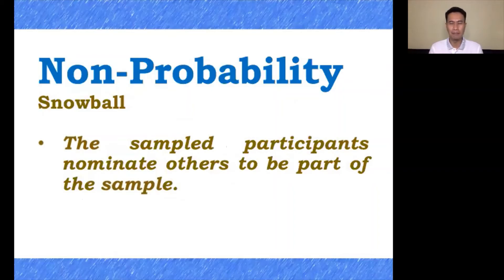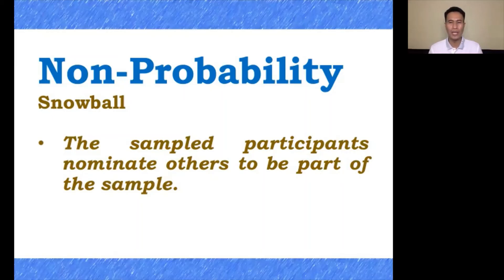Let's proceed to non-probability sampling. The first one is snowball sampling. Here, the sampled participants nominate others to be part of the sample. The participants you have chosen can provide additional respondents for your research. There will be times you wouldn't be able to identify a particular participant, and because the first participant knows your criteria, he can provide you with another participant who could supply the same data you need.